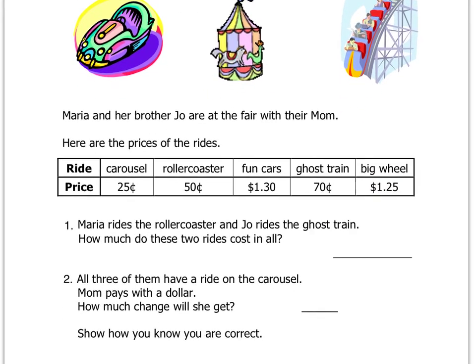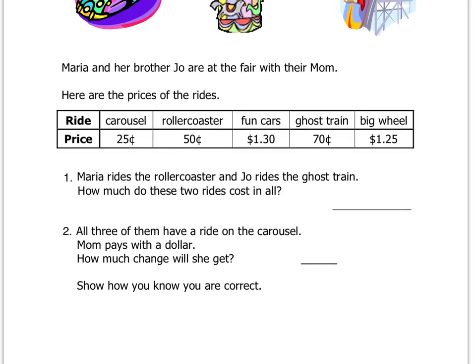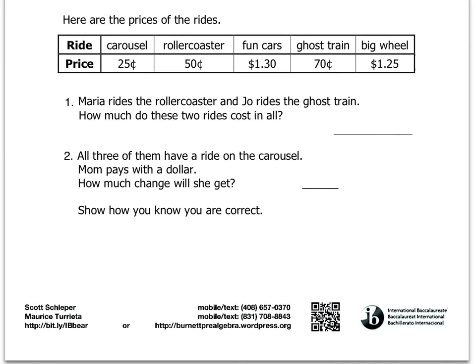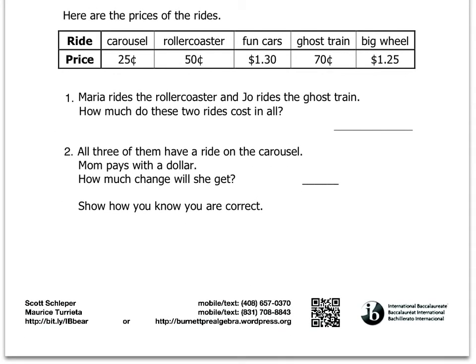Let's read the first question here. Maria rides a roller coaster and Joe rides a ghost train. How much did these two rides cost in all? So here's the ghost train. Here's the roller coaster with the prices. You have to figure out how much the two would cost total. So you should be able to figure out that total and then write it here. Please show your work right here.